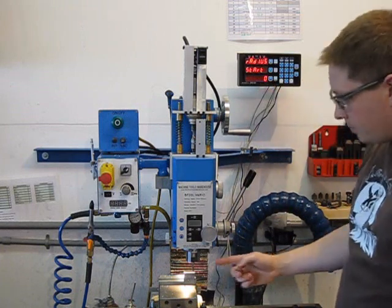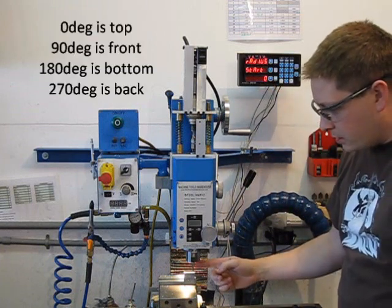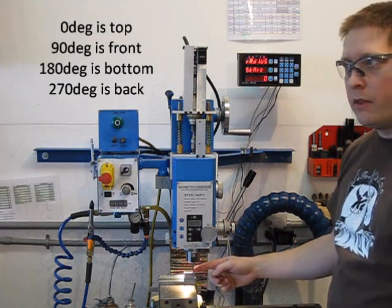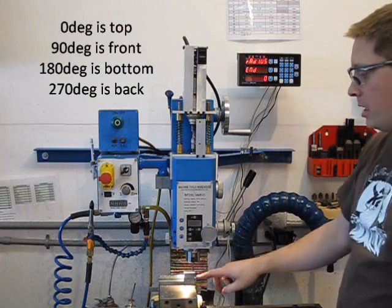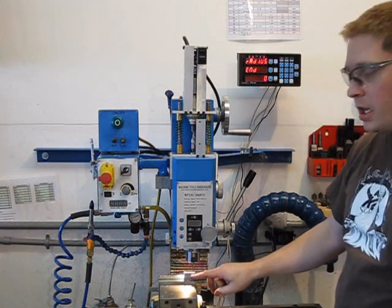So the start radius is going to be zero, which is the center, the top of the work piece. So that's my start. My end is going to be 90 degrees. So 90 degrees is going to be the front.